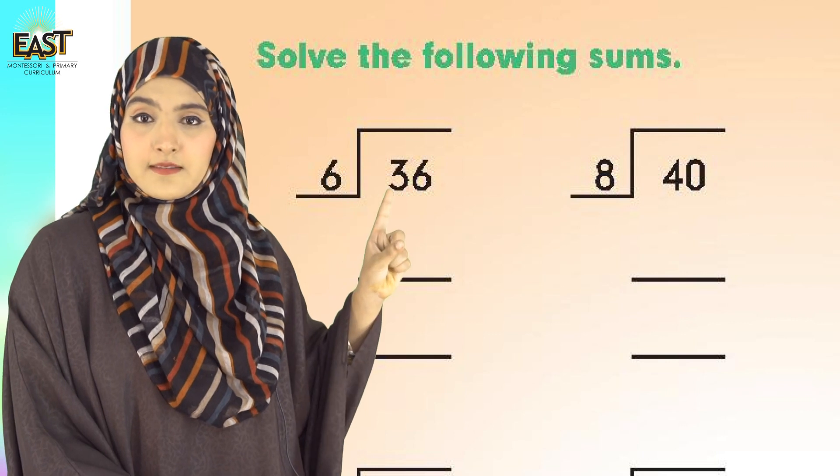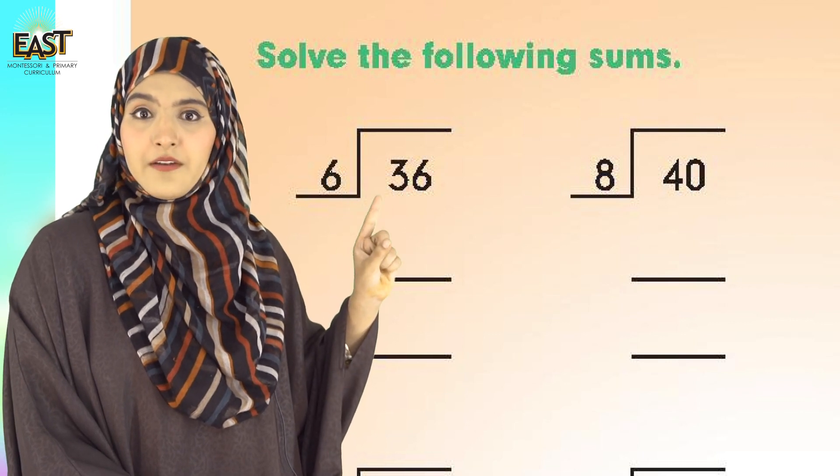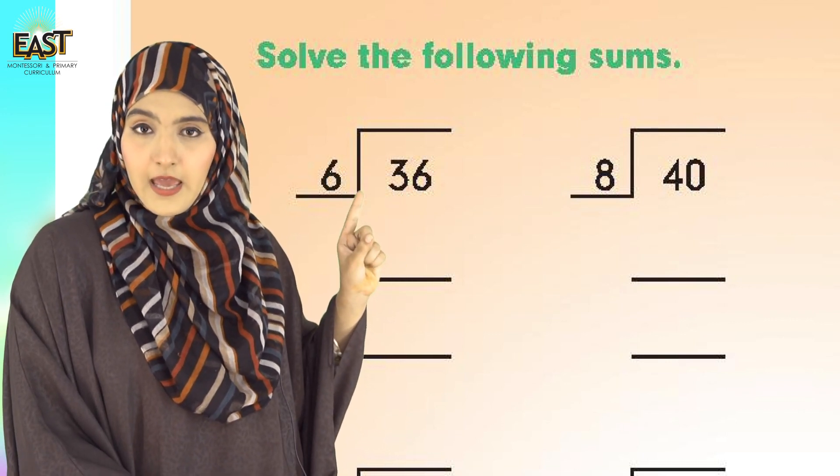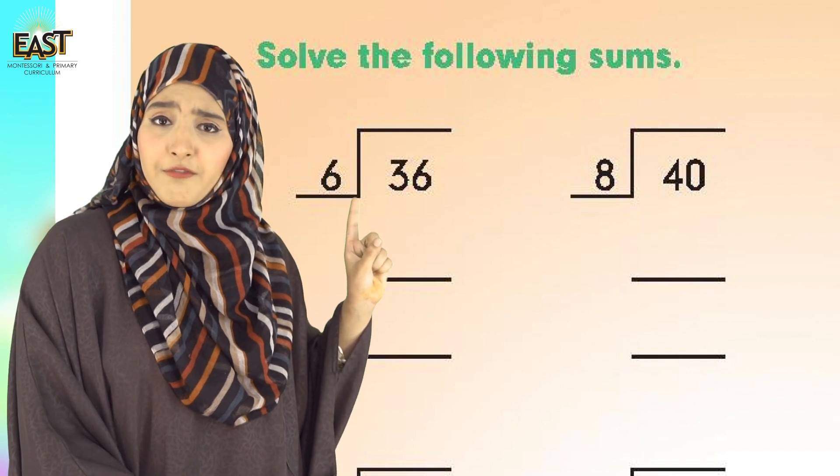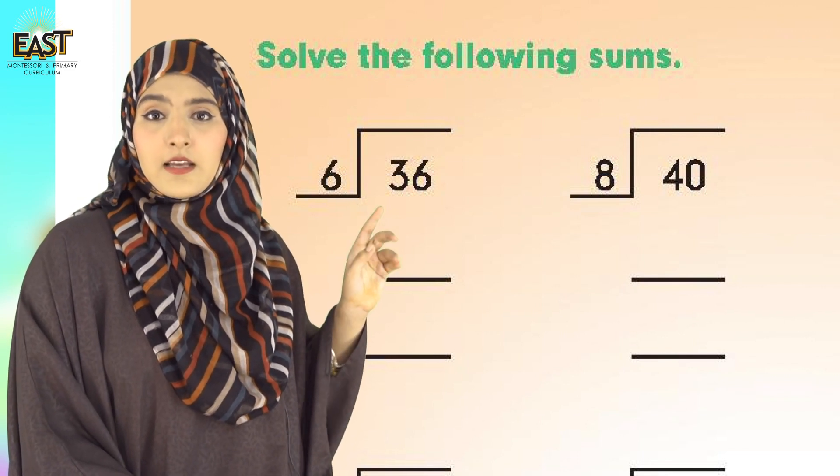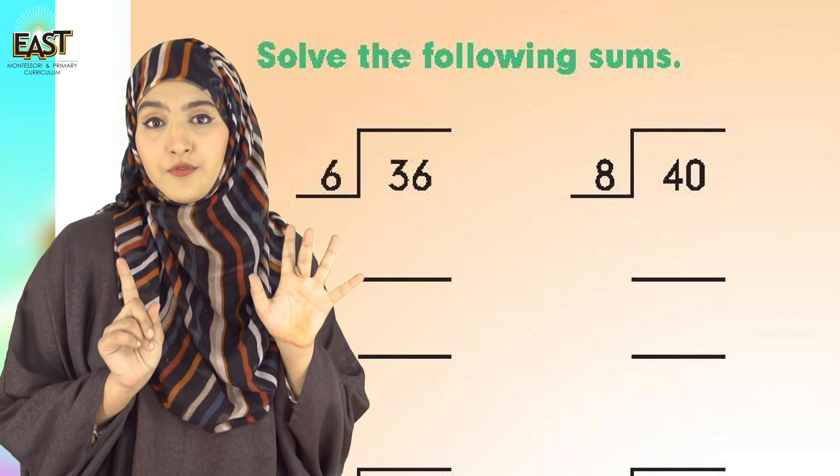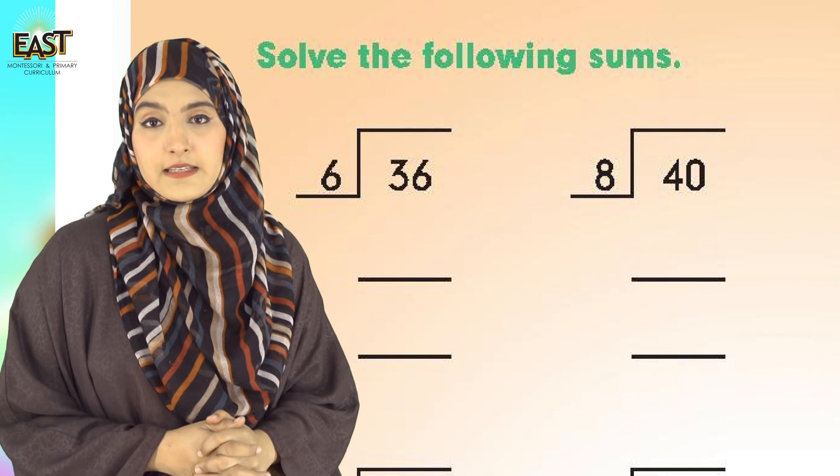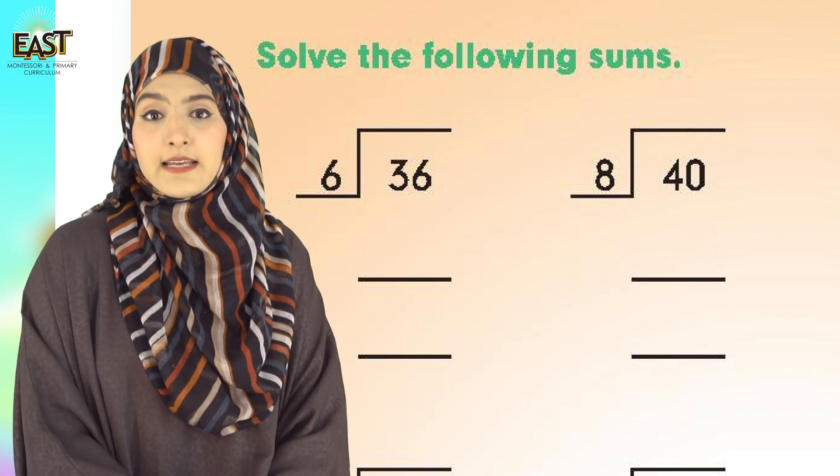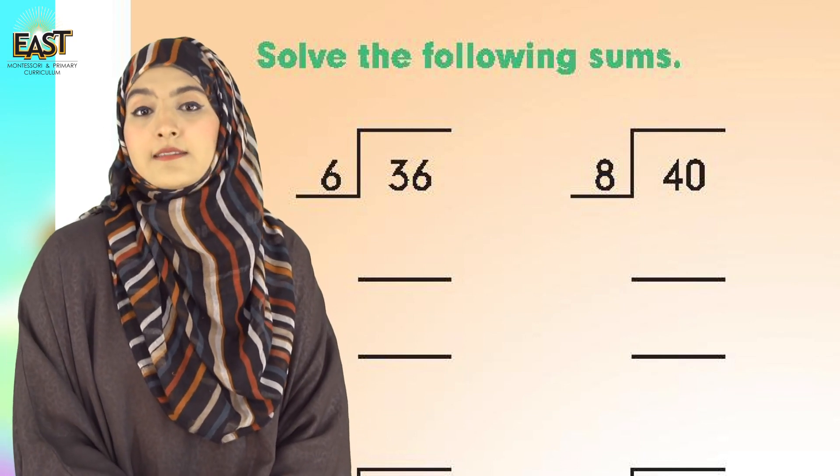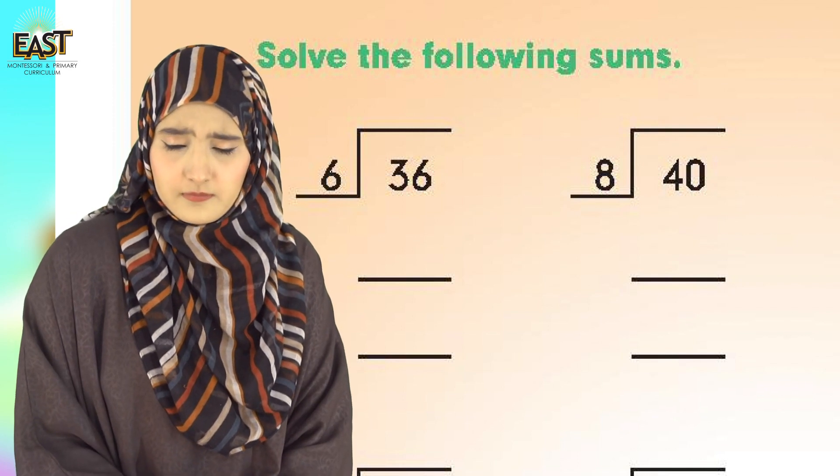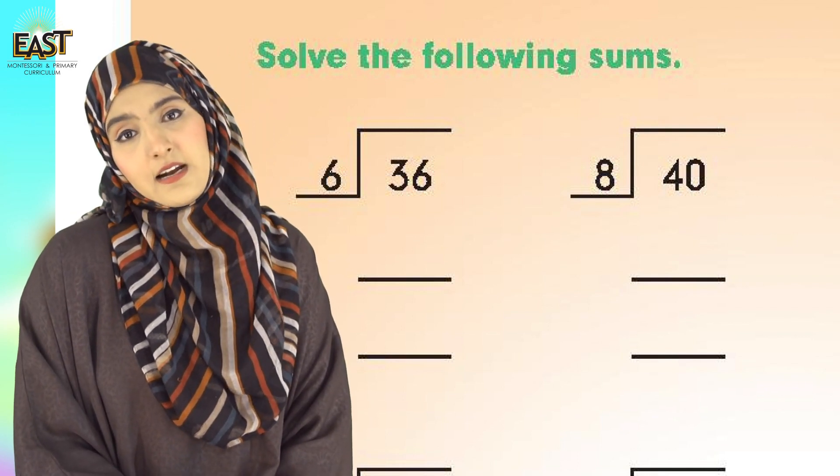You have to divide 6 from 36. If you have 36 candies and total number of friends are 6, we have to divide 36 candies among 6 friends. Let's see how we'll do it. We'll start reading 6 times table: 6 times 1 is 6.